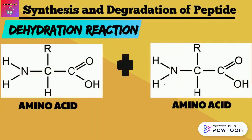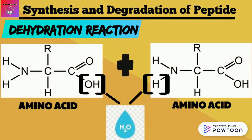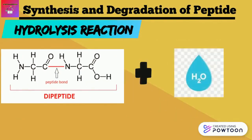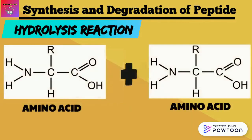Just like any other biomolecule, proteins can also be synthesized and degraded. In the dehydration or synthesis reaction, two amino acids combine together, where a hydroxyl group from one amino acid and a hydrogen atom from another are removed to form one molecule of water. Following that, a peptide bond is formed between the two amino acids, forming what we call a dipeptide. The hydrolysis or degradation reaction, on the other hand, is exactly the reverse reaction, where one peptide combines with one molecule of water, breaking the peptide bond and forming two amino acids.